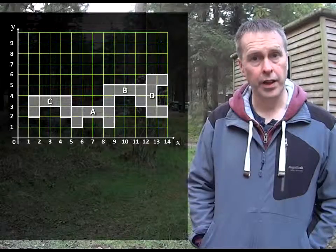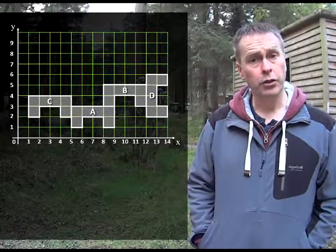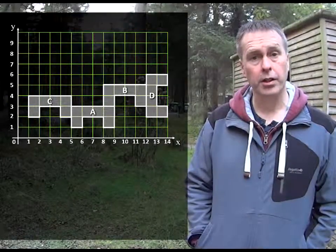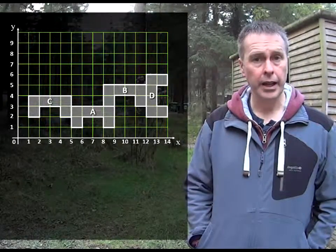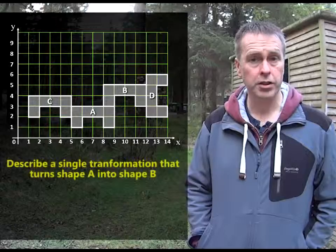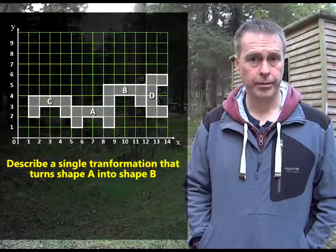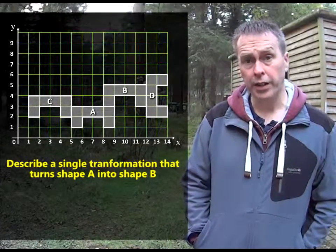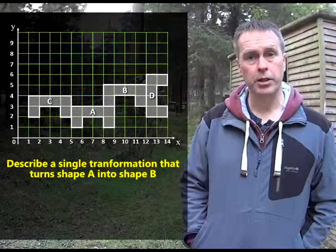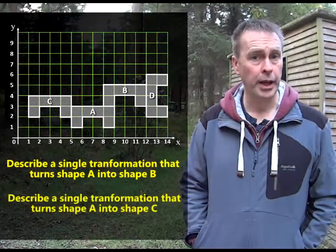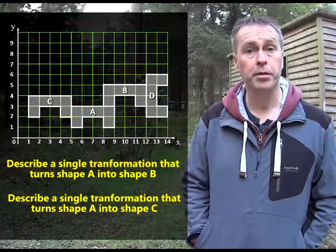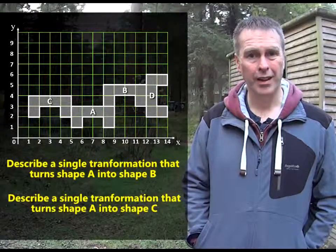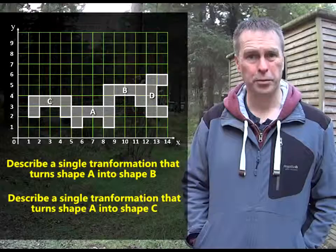So the first question is this: can you describe in a single transformation how shape A turns into shape B? And the second question: can you describe which single transformation would turn shape A into shape C? Use some maths and help me solve this problem.